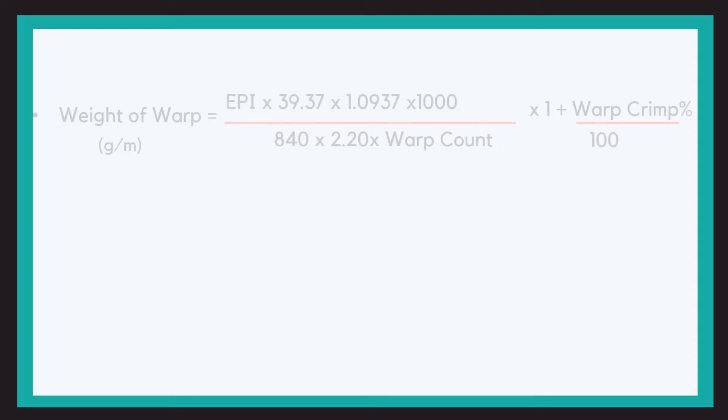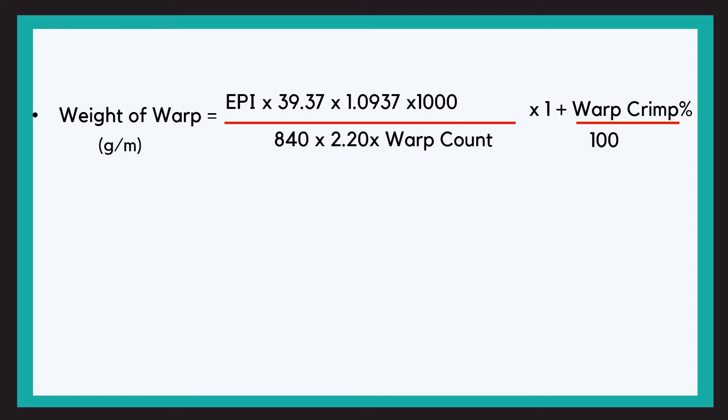So now let us see the formula. How to calculate the weight of warp: that is EPI × 39.37 × 1.0937 × 1000 divided by 840 × 2.20 × warp count × (1 + warp crimp percent upon 100). You don't need to memorize this formula. Let's clear why these digits are used. EPI is given in ends per inches, so we multiply by 39.37 to convert it into meters.